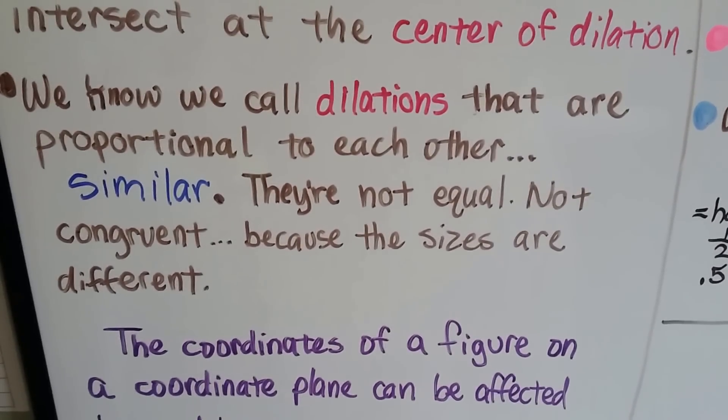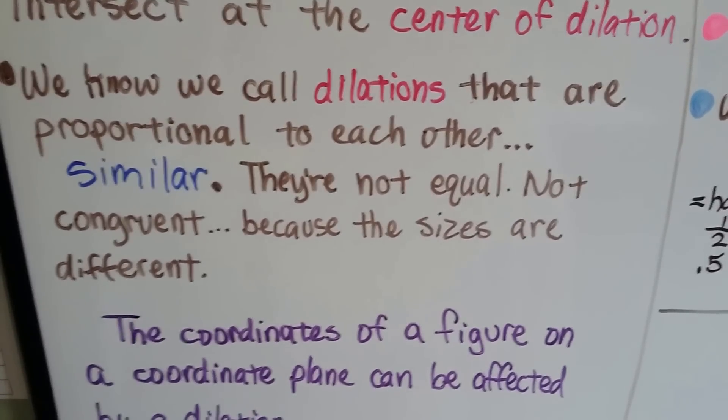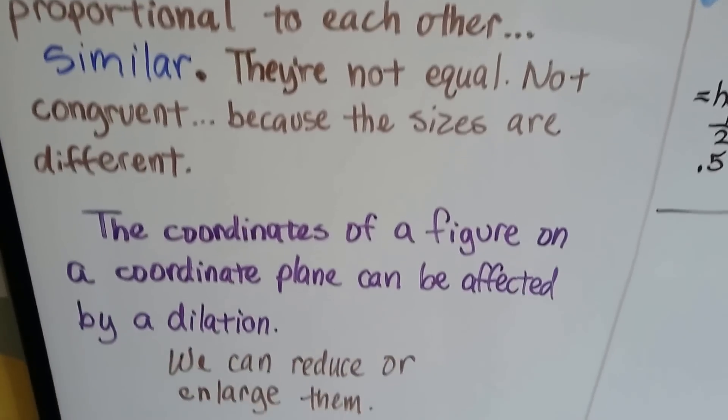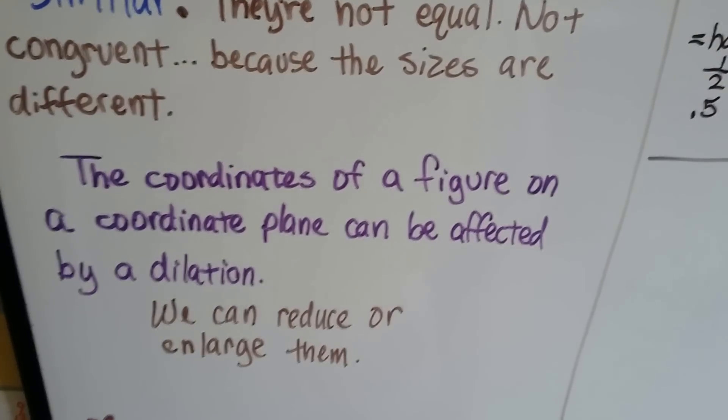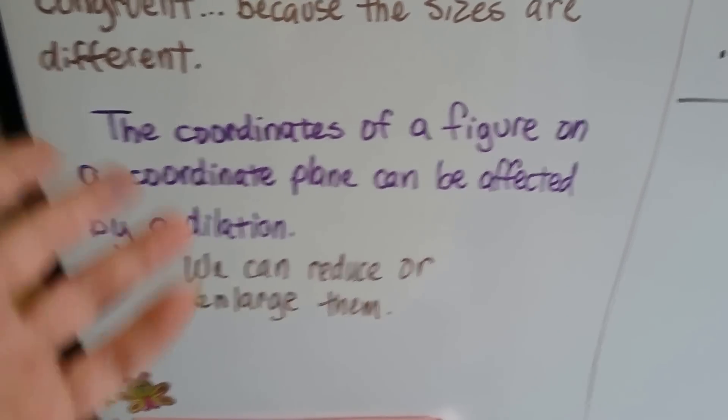They're not equal. They're not congruent because the sizes are different. They're just similar. The coordinates of a figure on a coordinate plane can be affected by a dilation. We can reduce them or enlarge them.